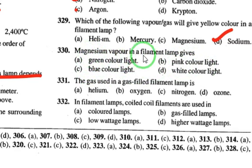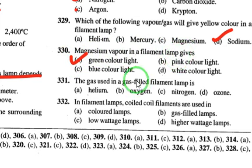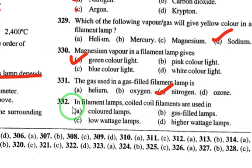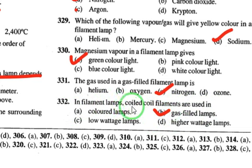Magnesium vapor in a filament lamp gives green color light — just remember this. The gas used in a gas-filled filament lamp is nitrogen. Coiled-coil filaments are used in gas-filled lamps.